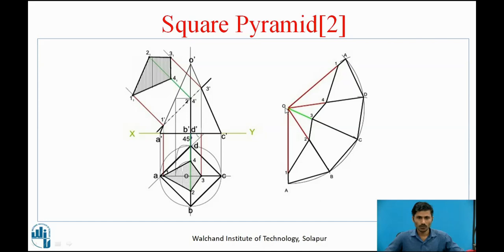To develop the surface, we place O point and draw OA with the true length, because we cut this pyramid at the OA inclined edge. We measure OA with the compass and cut an arc at OA radius. We then divide the arc using the base edge length — AB, BC, CD, and AD are all equal since it is a square. From the A point, we cut arcs on the circle and mark the points as A, B, C, D, and again A, giving us four triangular surfaces. This represents the development of the full pyramid without cut.